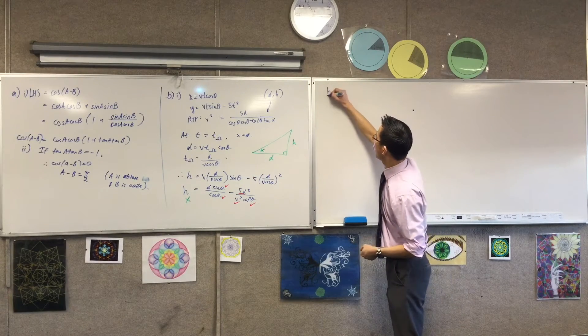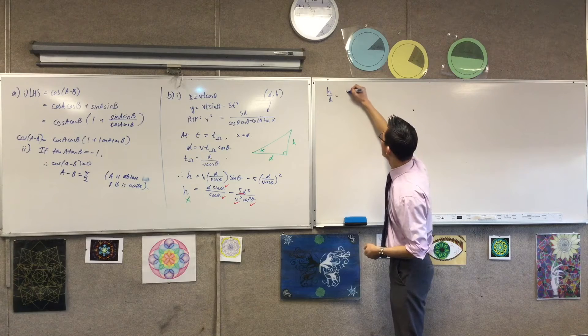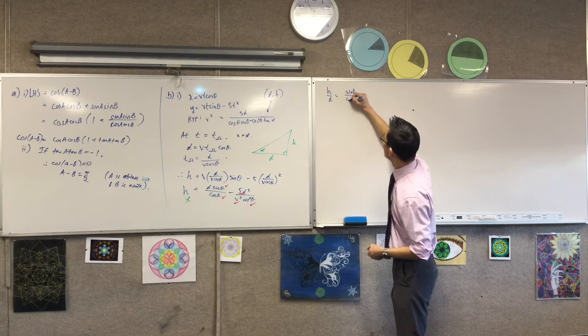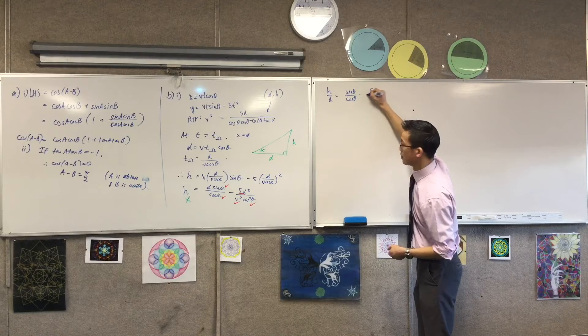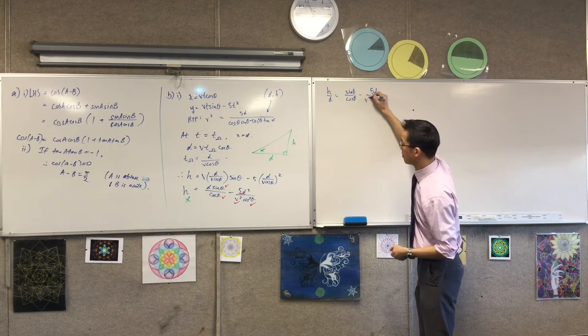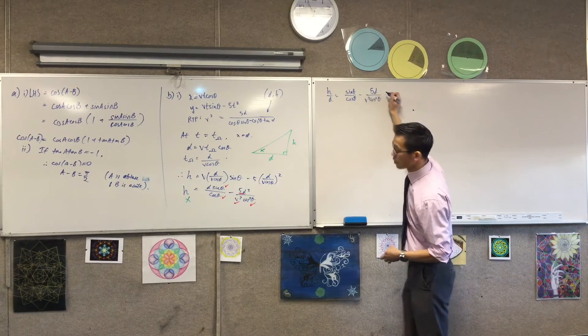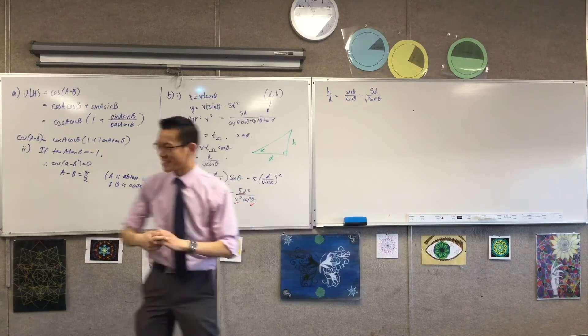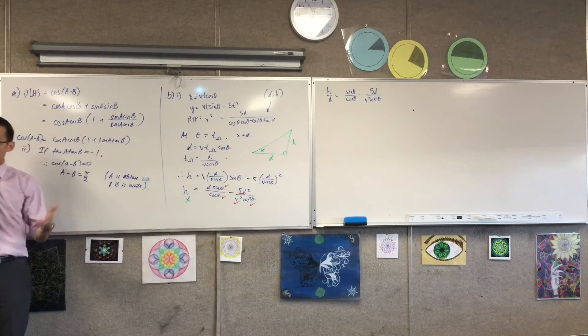That will give it to me on the left-hand side. So I'm going to divide through. H on D equals.